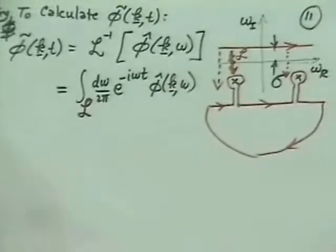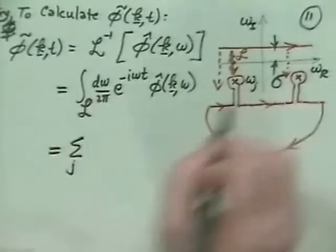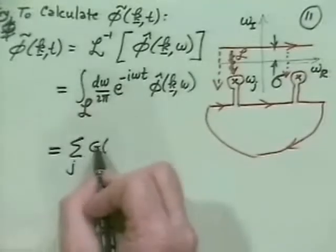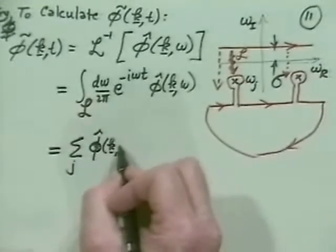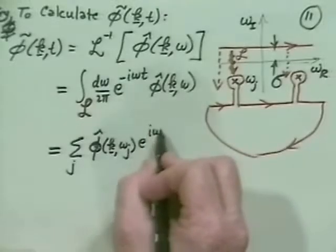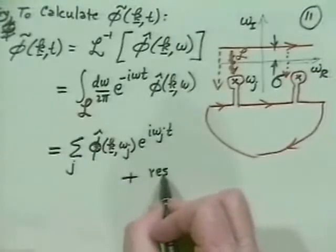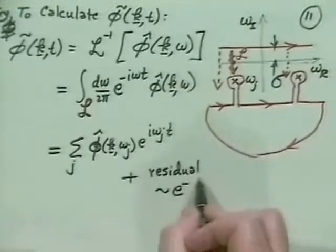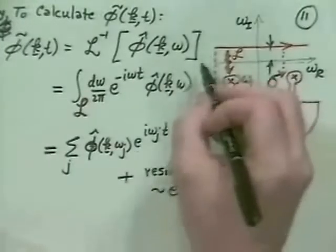You get residues from each of those poles. The net result of an inverse Laplace transform is a sum over the roots ωⱼ of the residues of φ̂ over 2π evaluated at (k, ωⱼ) times e^{iωⱼt}, plus a residual contour term proportional to e^{−γt}, where γ is the distance you have brought the contour down.